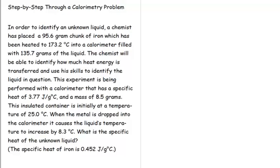In order to identify an unknown liquid, a chemist has placed a 95.6 gram chunk of iron, which has been heated to 173.2 degrees Celsius, into a calorimeter filled with 135.7 grams of the liquid. The chemist will be able to identify how much heat energy is transferred and use his skills to identify the liquid in question. This experiment is being performed with a calorimeter that has a specific heat of 3.77 joules per grams degrees Celsius and a mass of 8.5 grams. This insulated container is initially at a temperature of 25 degrees Celsius. When the metal is dropped into the calorimeter, it causes the liquid's temperature to increase by 8.3 degrees Celsius. What is the specific heat of the unknown liquid? The specific heat of iron is 0.452 joules per grams degrees Celsius.